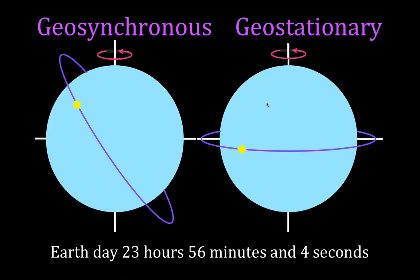For geostationary, the Earth goes around once in 23 hours 56 minutes and 4 seconds, and the satellite orbits the Earth also in 23 hours 56 minutes and 4 seconds. That means the satellite stays right above the same place on Earth all the time — if you look up in the sky, the satellite will always be there at the same place. This geosynchronous and geostationary condition occurs at only one height above the Earth's surface.